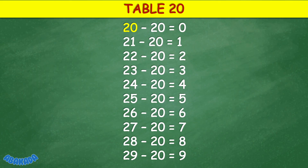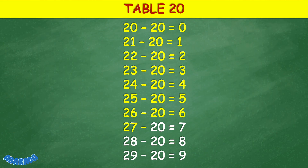Table 20: 20 minus 20 equals 0, 21 minus 20 equals 1, 22 minus 20 equals 2, 23 minus 20 equals 3, 24 minus 20 equals 4, 25 minus 20 equals 5, 26 minus 20 equals 6, 27 minus 20 equals 7, 28 minus 20 equals 8, 29 minus 20 equals 9. Thank you for watching.